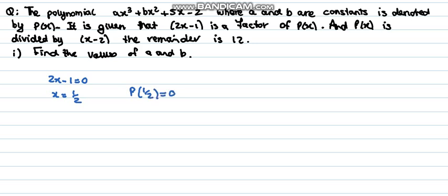So p(½) would equal, because this would become a(½)³ + b(½)² + 5(½) - 2 equals 0.